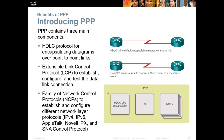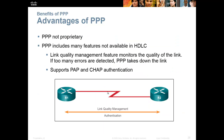Now we're going to talk about PPP — Point-to-Point Protocol. It's made up of three different layers: an HDLC-like encapsulation layer, a Link Control Protocol (LCP) to establish the connection and test the data, and an NCP layer that works with all different protocols — IPv4, IPv6, Novell IPX/SPX, or AppleTalk. PPP is typically the way to go if you want authentication on your point-to-point links. PPP is non-Cisco proprietary — it's open source — so if you're dealing with non-Cisco routers, you want to use PPP.